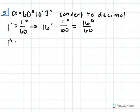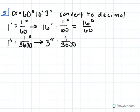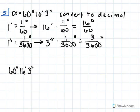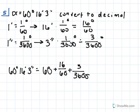Next, we know that 1 second is equal to 1/3600th of a degree. So we do the same thing: 3 seconds times 1 over 3600 equals 3/3600 degrees. Then to rewrite our angle measure in decimal form, we can say that 60 degrees 16 minutes and 3 seconds is equal to 60 plus 16 over 60 plus 3 over 3600. Using a calculator to simplify, we get approximately 60.268 degrees.